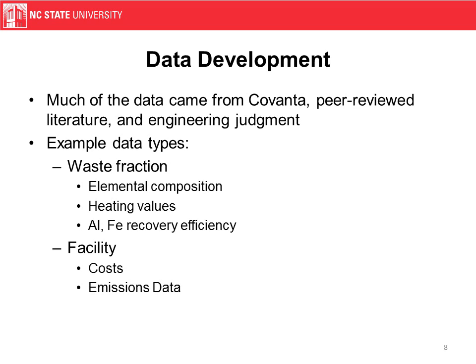In our model, we have two big data types. The first are waste fraction types, which have elemental compositions as well as heating values, but they also have things like metal recovery efficiencies, which allow us to estimate the recovery efficiency for each waste component. For an aluminum can, we might have a very high recovery rate, while for things that might have less aluminum, they would have a lower recovery rate.